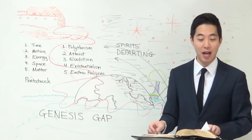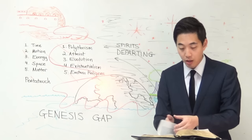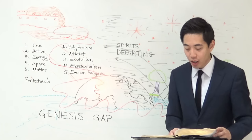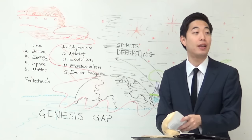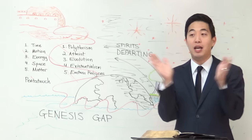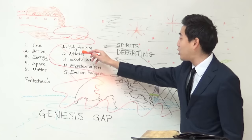John chapter 1, verses 1-3: "The same was in the beginning with God. All things were made by him; and without him was not anything made that was made." That's the Word that created everything. Back in Genesis 1:3 — when God says something, it must be created. God said "Let there be light," and there was light — just like that.